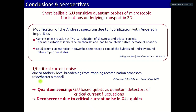For the second part, we can get critical current noise due to Andreev level broadening, allowing sensing of the correlations most relevant for these fluctuations. For the first part, the model was microscopic — the take-home message is that not only may we have a modification explaining how the current-phase relation is altered by impurities, but we also may have detailed microscopic spectroscopic evidence of these impurities. Thank you very much.